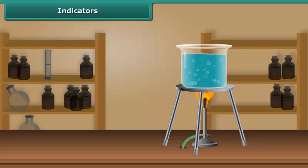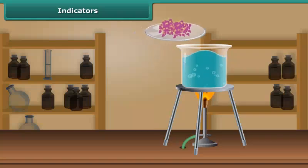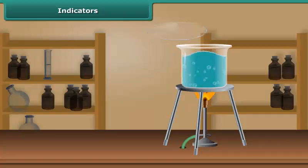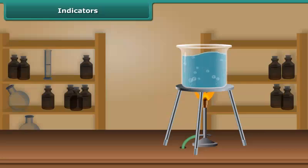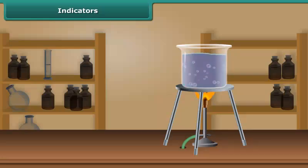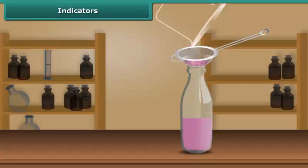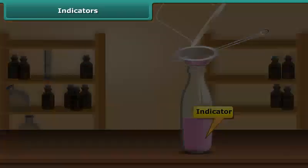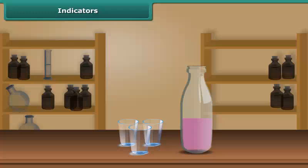Heat till the water becomes warm. Then, to this warm water, add petals of china rose. Keep the mixture for some time till the water becomes colored. Filter this purple-red water in a bottle with a tea strainer. This purple-red solution is your indicator. Then, take a small amount of this indicator in three small glasses.